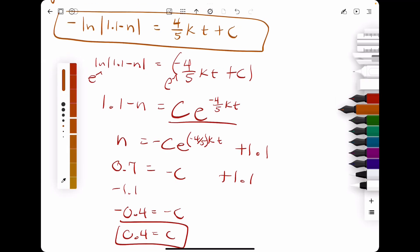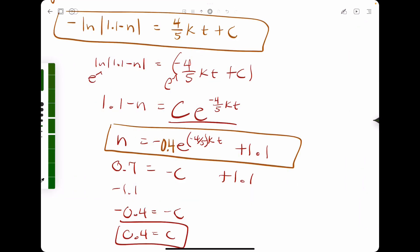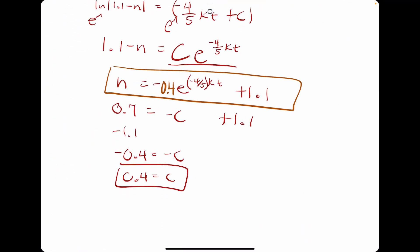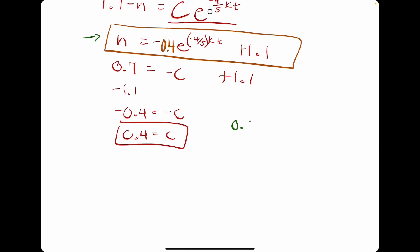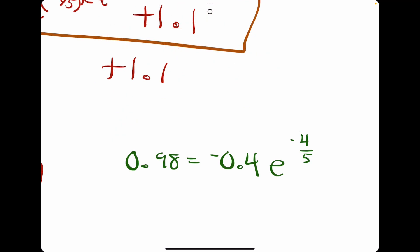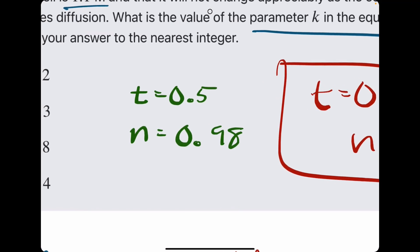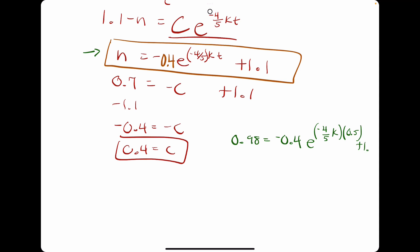So going back to where we actually had our general solution here. We'll plug in 0.4 in place of c. Now what's the last thing we need? We need the next value of the concentration corresponding to that time value of 0.5. So n equals 0.98 when t equals 0.5. So we will plug these values into this equation. So n equals 0.98 equals negative 0.4 e to the negative 4 fifths k times t. But t in this case is 0.5. And then we have the plus 1.1 on the end there.